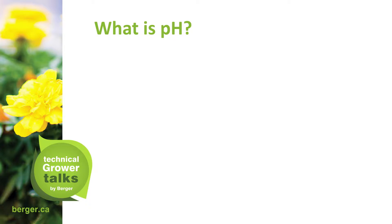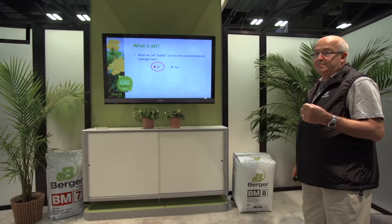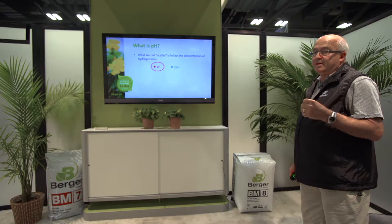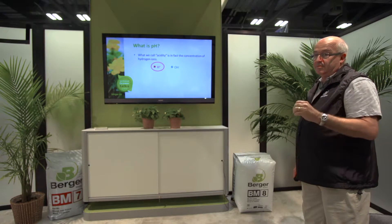What is pH? What we call acidity is in fact the concentration of hydrogen ions — H ions. So the more hydrogen ions in the media, the more acidic. The more acidic, the pH goes down.